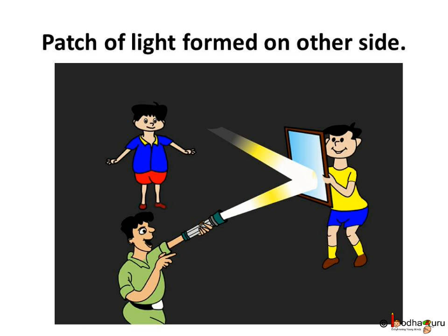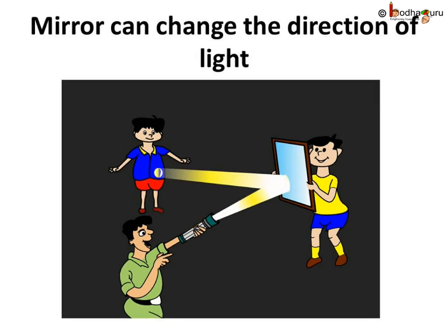Let him direct the beam of torchlight onto the mirror. What do we see? We see a patch of light on the other side. Now the person can adjust the direction of the torch so that the patch of light falls on the second person standing in the room. Wow! Interesting to watch, isn't it?